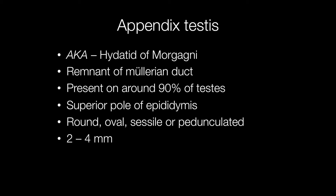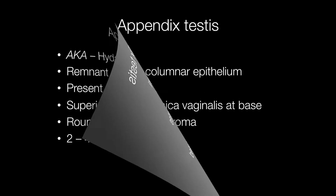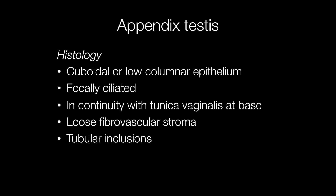They may be round, oval, sessile, or pedunculated and the usual size is 2–4 mm. Histologically they are covered by a cuboidal or low columnar epithelium that is focally ciliated, and the epithelium is in continuation with the tunica vaginalis at the base of the appendix testis. The fibrovascular stroma is rather loose and there are sometimes tubular inclusions.